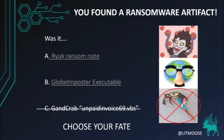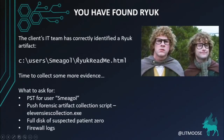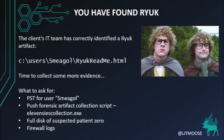We vote again. We've found a ransomware artifact — is it a Ryuk ransom note or a Globe Impostor executable? Ryuk wins. We found a Ryuk ransom note. The client's IT team has correctly identified a Ryuk artifact: it is the Ryuk readme.html. This is very common — this is usually the correct naming mechanism for what it drops. It is associated with the user Smeagol. You take note of that, and it's time to collect more evidence.